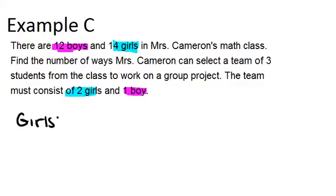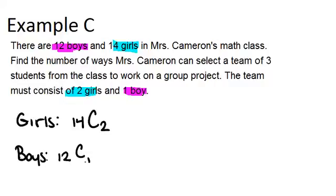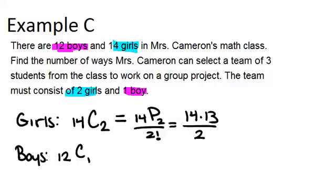For the girls, there are 14 girls and we're choosing 2, so the number of ways to do that is 14C2. To compute this, we have 14P2 divided by 2 factorial, which is 14 times 13 divided by 2, because 2 factorial is just 2 times 1, which equals 2. That gives us 91.